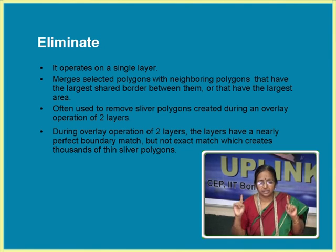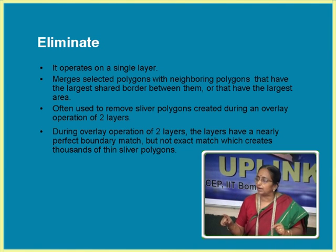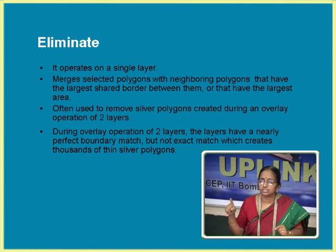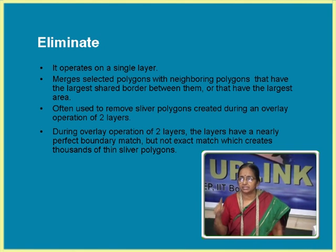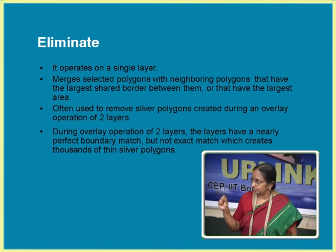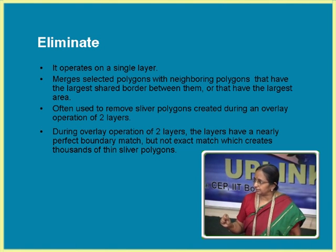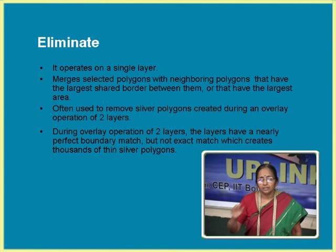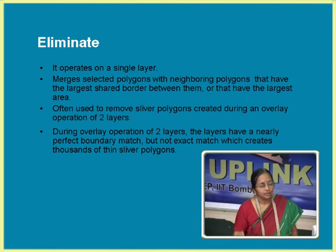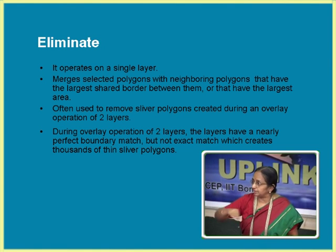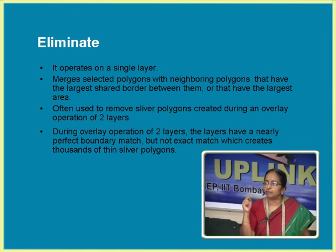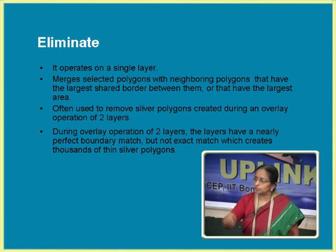The eliminate operation operates on a single layer and merges selected polygons with neighboring polygons that have the largest shared border and the largest area. Whenever you run a union operation, normally it creates unwanted polygons which we call slivers — thin, skinny, long polygons. These sliver polygons can be removed using the eliminate operation. Normally they ask you a threshold value for area. Any polygon with area less than your threshold value gets eliminated.